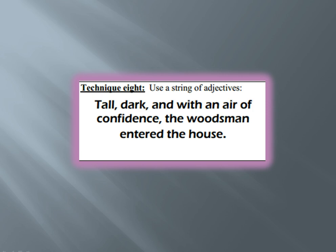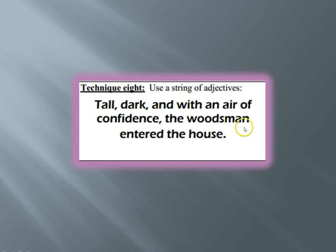Technique eight — apparently I skipped seven somewhere, I'll add it in for you later. Technique eight is using a string of adjectives: 'Tall, dark, and with an air of confidence, the woodsman entered the house.' I'll be honest, this is not my favorite strategy because in my experience very few students do this well. But it is effective because it's descriptive of a character, and again it raises questions — you want to know who is this tall, dark, confident woodsman and why is he entering the house. So that is one more option.